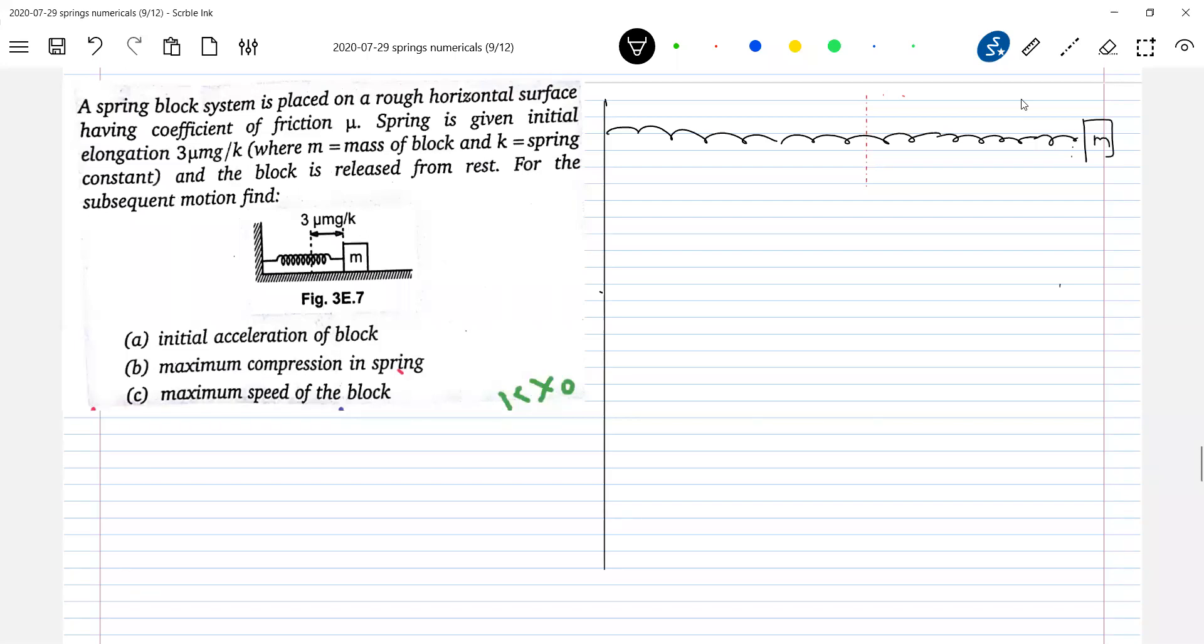How much is it? 3μmg by k. So call this x0. So how much of spring force will act here? kx0 will act and the block is kept on rough surface, so friction will be acting. And friction is how much? μmg.